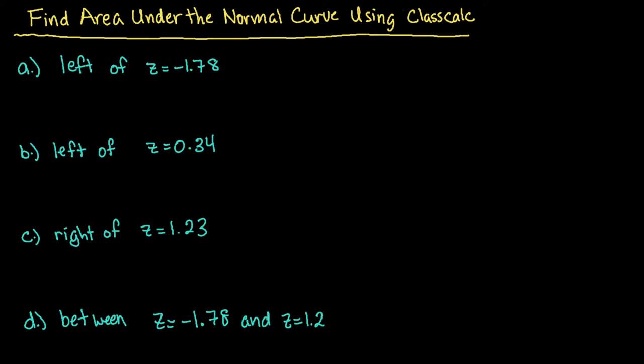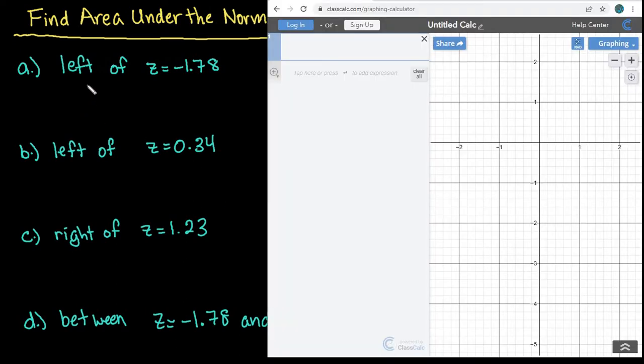Okay, so let me go ahead and pull up the calculator and we're going to be looking at the following areas. So the first one is left of z equals negative 1.78. So what we want to do first is pull up our normal distribution.